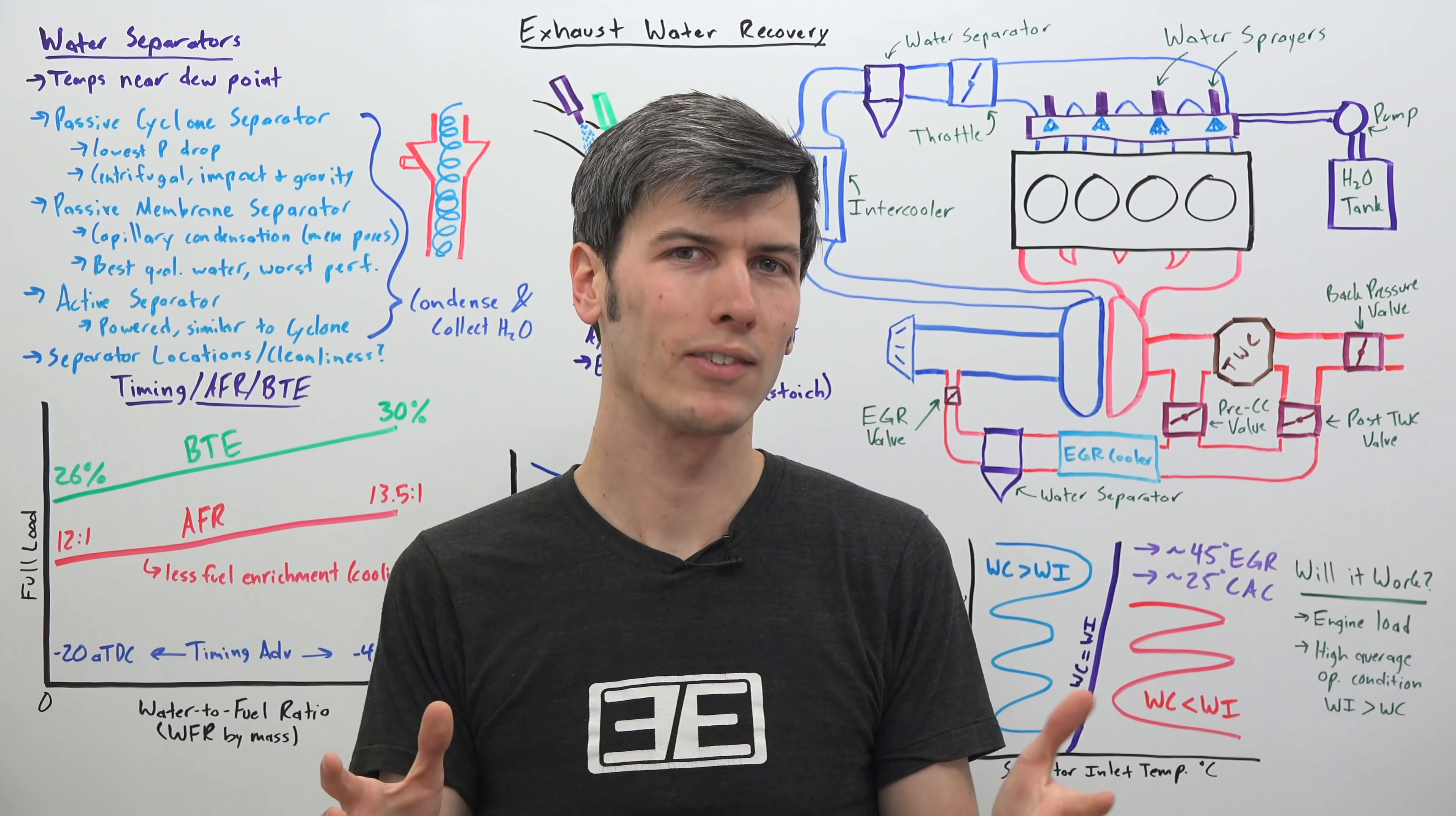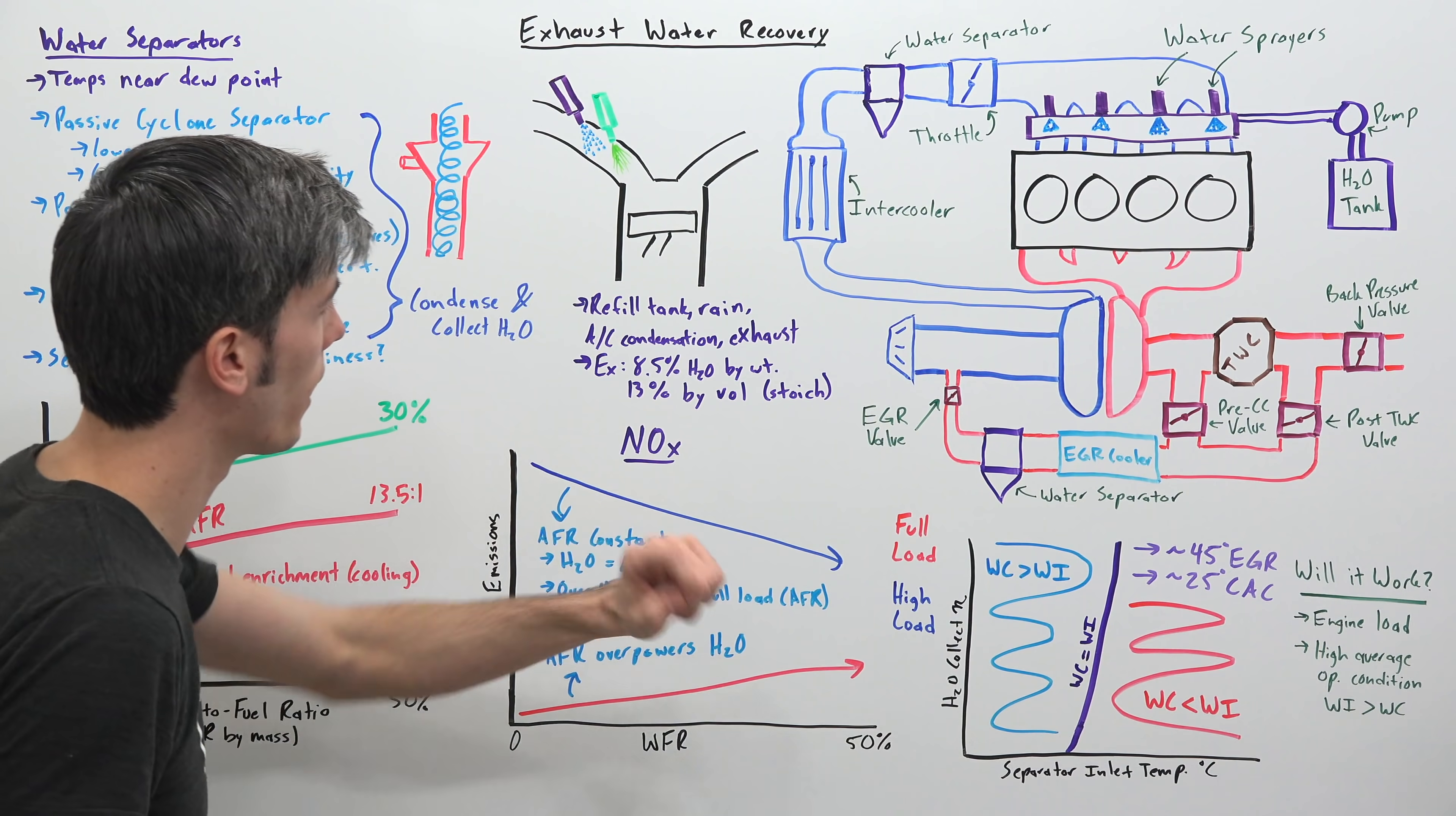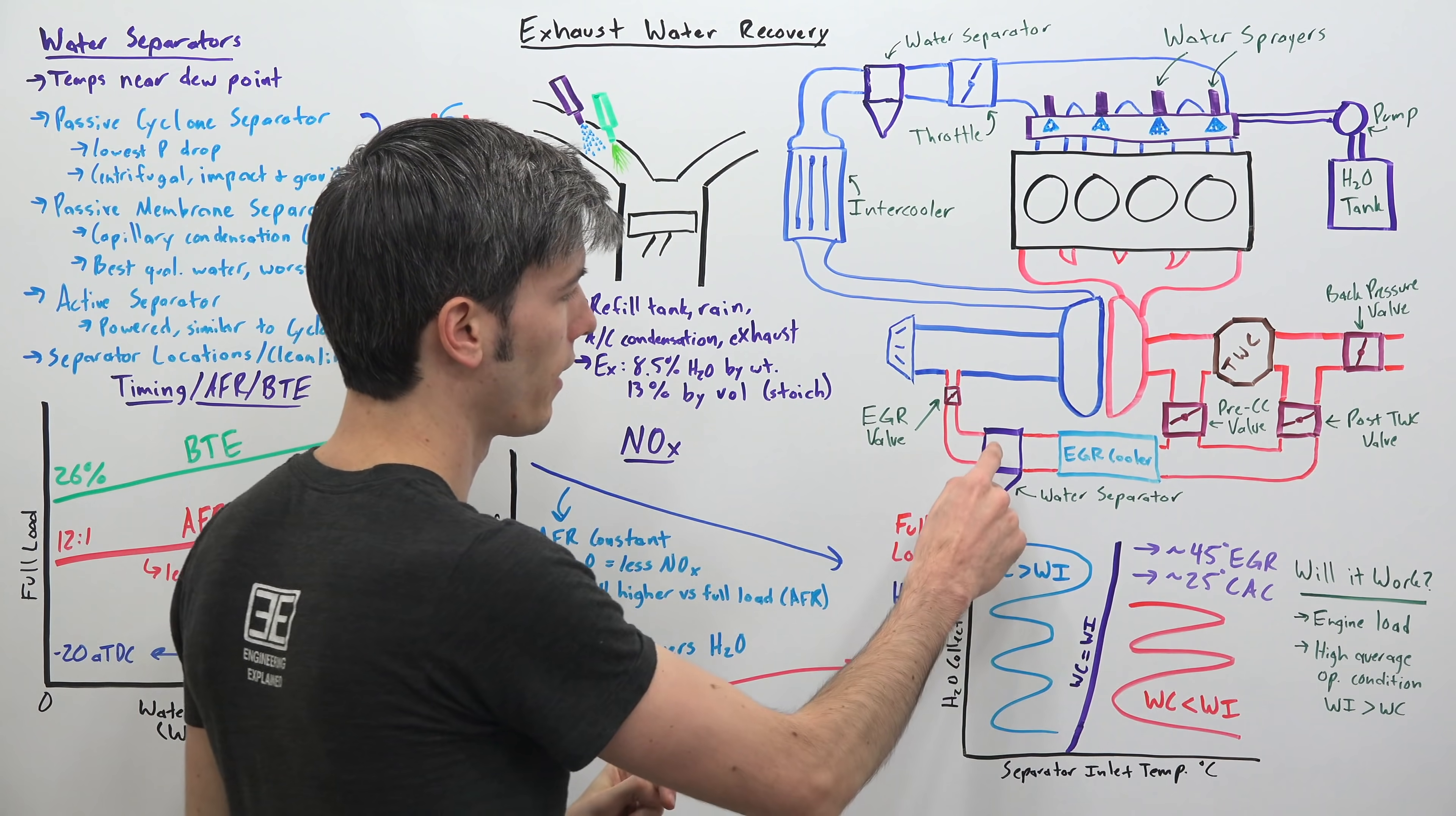Okay, so what's the best location to put these water separators? And where do you get the cleanest water to use in your engine? And so as we mentioned previously the passive membrane separator although it had the worst performance, it had the cleanest water that it drew out from the air. And then as you might imagine as far as the different locations of where you're pulling water from, the water separator after the intercooler pulled out the cleanest water.